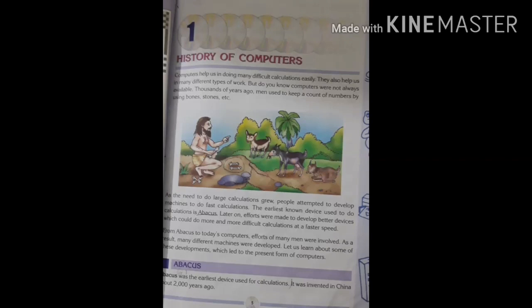Abacus was the first calculating device used for calculations. It was invented in China about 2000 years ago. Abacus was the first device made for calculations, and it was made in China 2000 years ago.